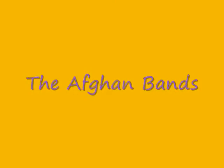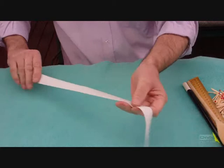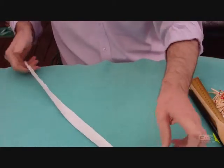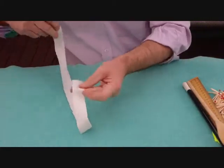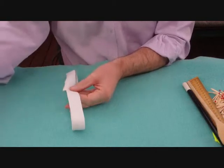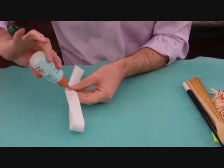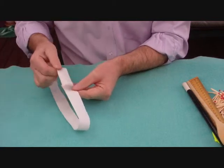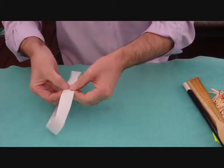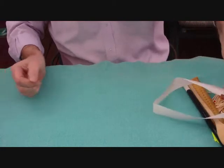This is called the Afghan bands and this one goes quite a long way back. You take a length of paper - this is before you actually perform of course, this is the preparation stage. You fold the ends together and with a little bit of glue just make sure that those ends are together, a simple loop.